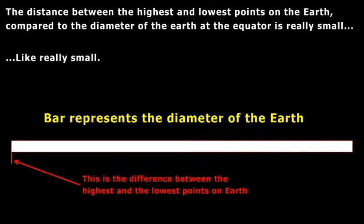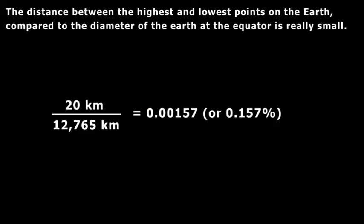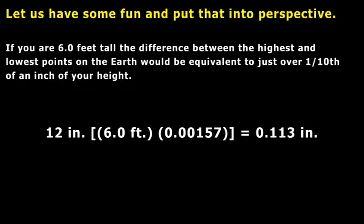And remember, I said that the difference between the two is 20 kilometers. So you're looking at 0.157 percent the diameter of the Earth between the highest and lowest places on the surface. And to put this another way, if you were six foot tall and the difference between the highest and lowest points on the Earth would be, so to scale to you being six feet tall,